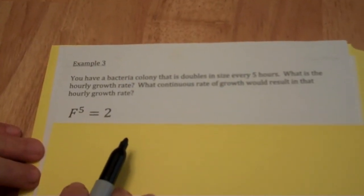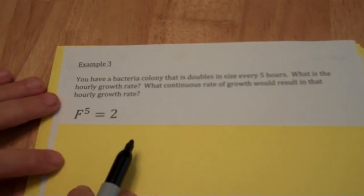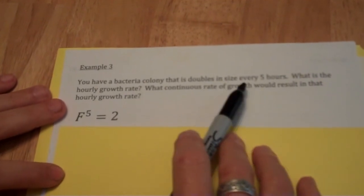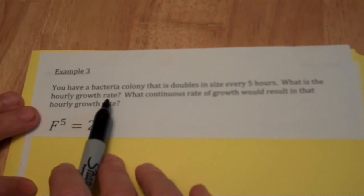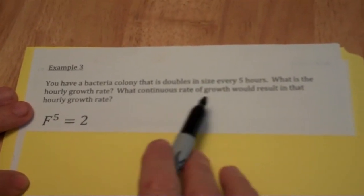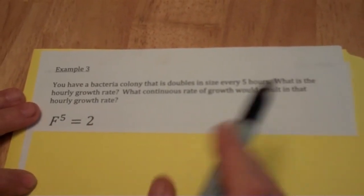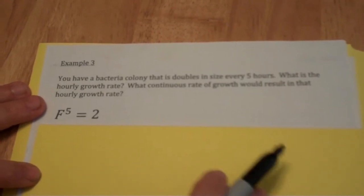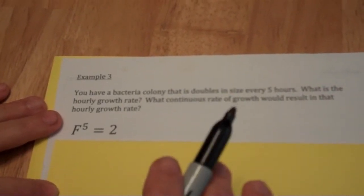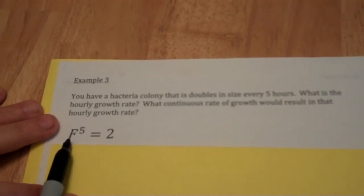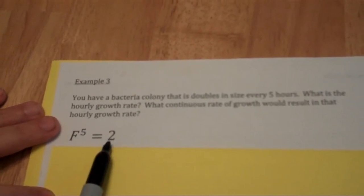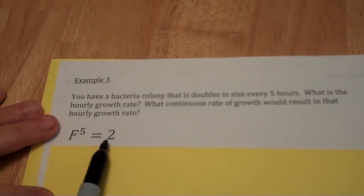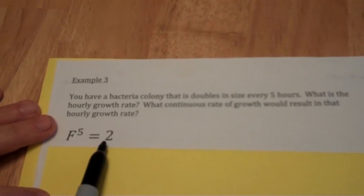Let's do our third and final example. I have a bacteria colony that doubles in size every five hours. I want to find the hourly growth rate and the continuous rate of growth that would result in that hourly growth rate. I'm hoping you're going to see that once that factor has been applied five times, I end up with double, or a factor of two, of what I had to begin with.